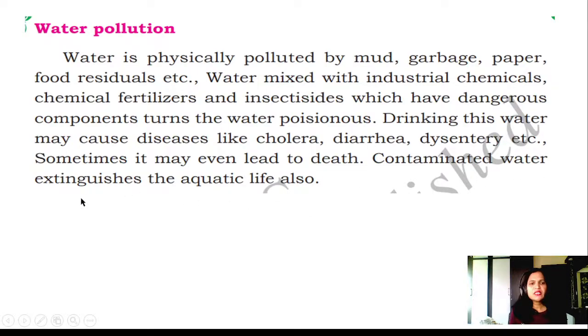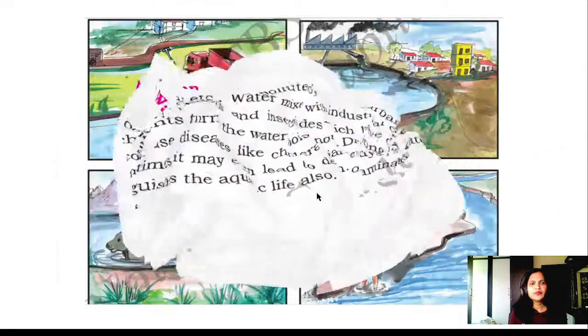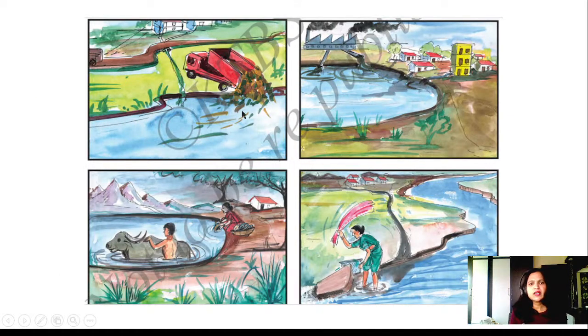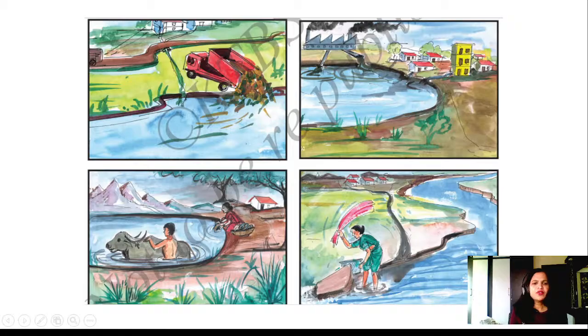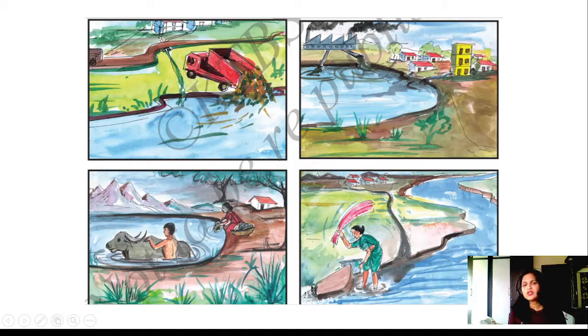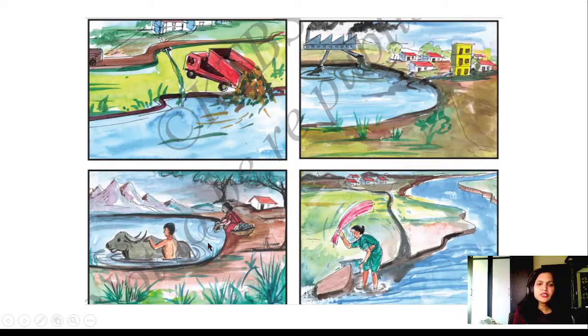Here they are dumping garbage into the pond. Here they are dumping industrial pollution into the water resource. Here in the pond they are washing the buffaloes in the river. They are washing their clothes. It will pollute the water. It will be unfit for drinking. Do you drink the clothes-washed bucket water for drinking? No, you will not use that. That's why it is also a source of water. We should preserve it, should not pollute that, should not wash clothes in the rivers.